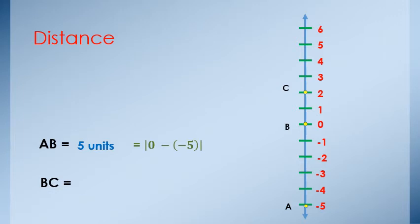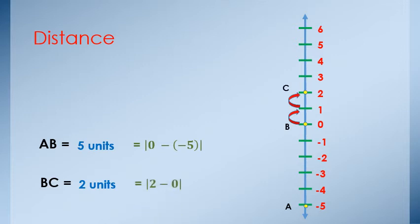Distance BC: count from B to C — 1, 2 units. If you use the rule: absolute of 2 minus 0 equals the same result, 2 units.